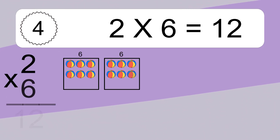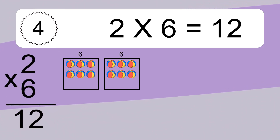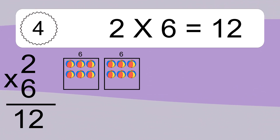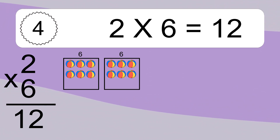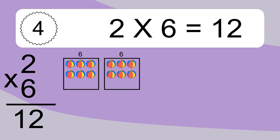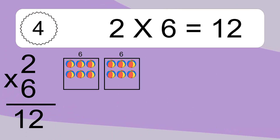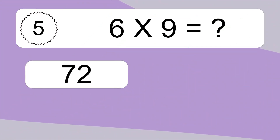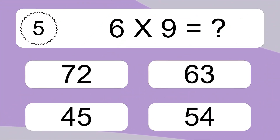2 times 6 equals what? 2 times 6 equals 12. We have 2 boxes, and each box has 6 colorful balls inside. If you count all the balls in all the boxes together, you will have 2 times 6 balls. This equals 12 balls.